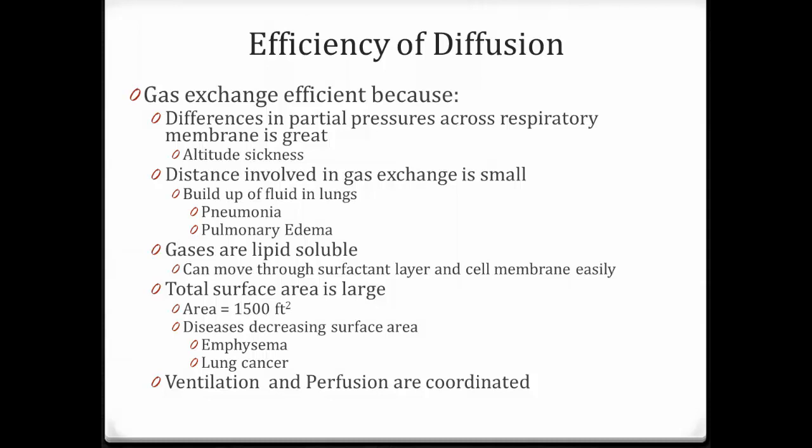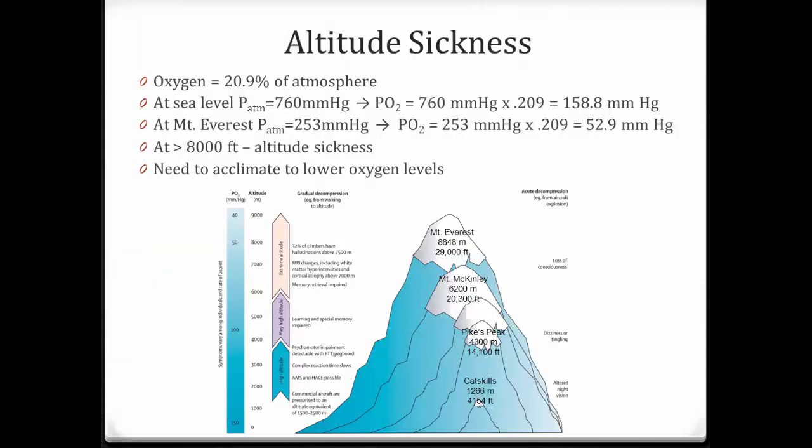The efficiency of diffusion across our membranes depends on several structural factors that enhance gas exchange. The difference in partial pressures across the respiratory membrane is very great — oxygen is 105 in the alveoli and only about 40 in the incoming capillaries. That's a big gradient, and the bigger the gradient, the more diffusion takes place, giving us lots of oxygen into the capillaries.